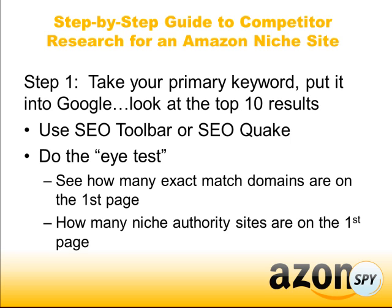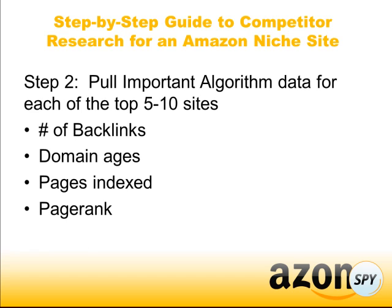What I use is the SEO Toolbar — or you can use SEO Quake — both are Firefox plugins. I'll show you the SEO Toolbar when we do a live run-through of how this process works. The second thing I'm going to do is pull important algorithm data for each of the top five to ten sites on the first page for that keyword. The things I look at are: number of backlinks pointing to the domain, how old the domain is, the number of pages indexed by the search engines, and their Google PageRank. You can gather a pretty comprehensive competitor analysis based on these four things.